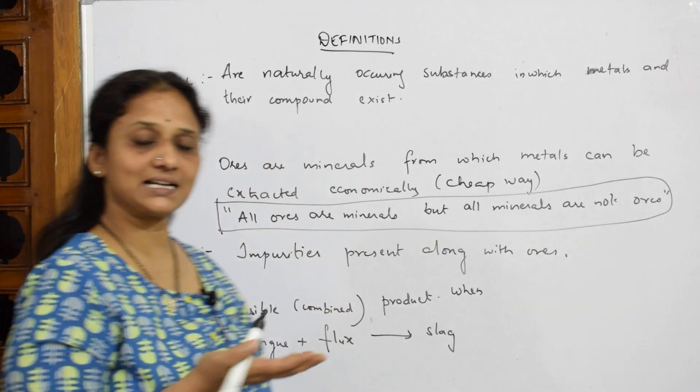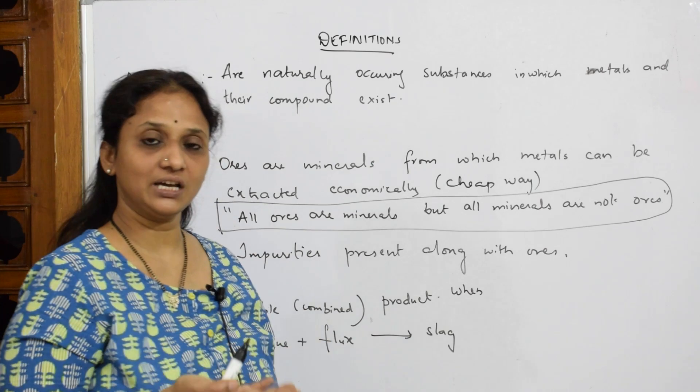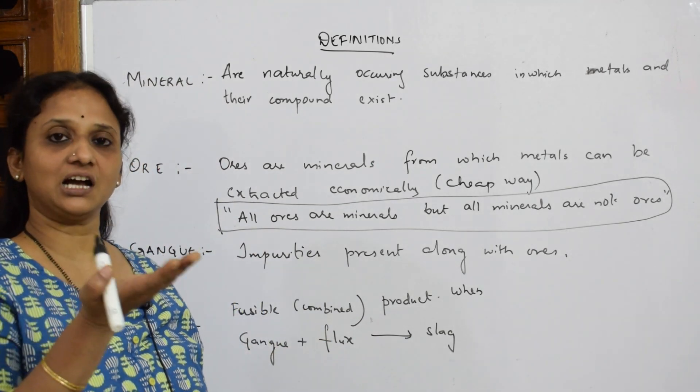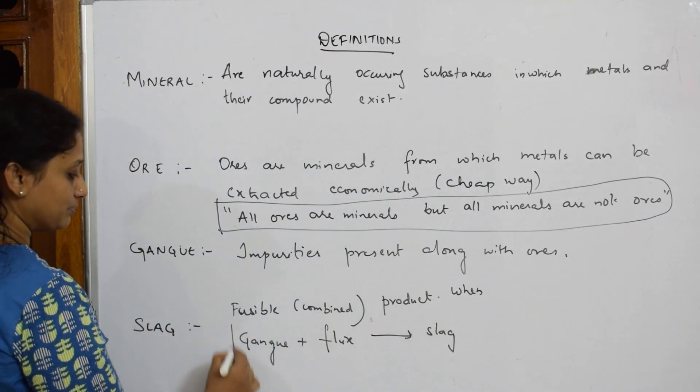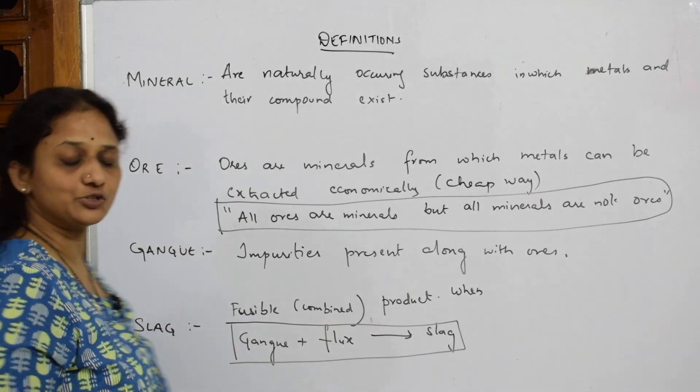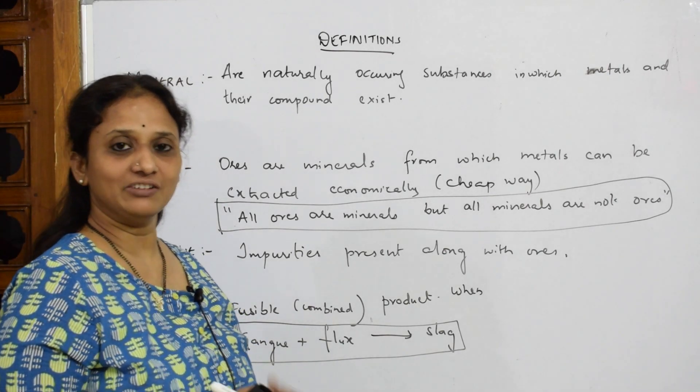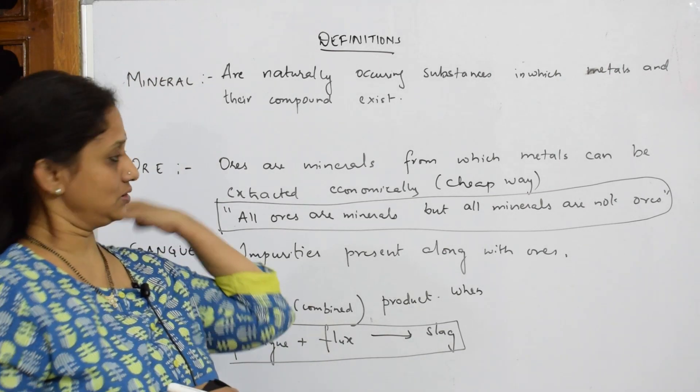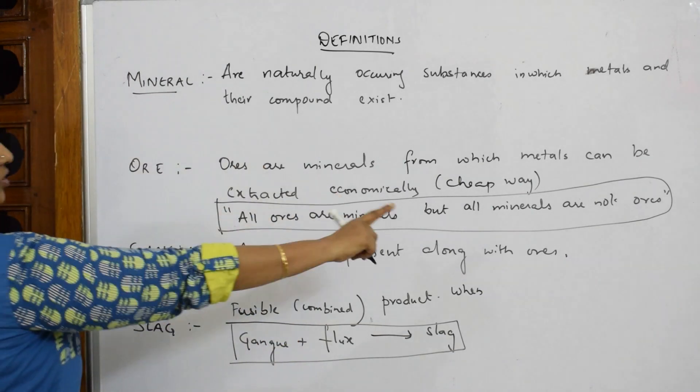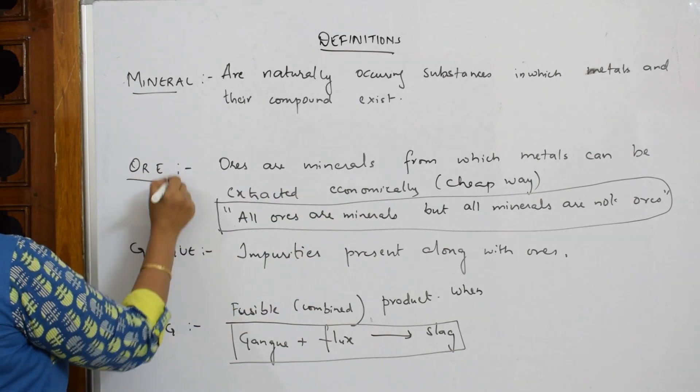Slag is that liquid layer which I can separate out in the form of impurities. I can wash it off or separate it because it forms a layer above the metal surface. So gangue (the impurity) plus flux together forms slag. When I do the examples, I'll show you with silica and iron oxide. As of now, remember: all ores are minerals, but not all minerals are ores.